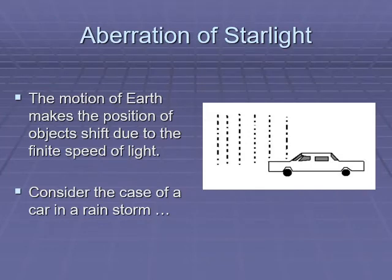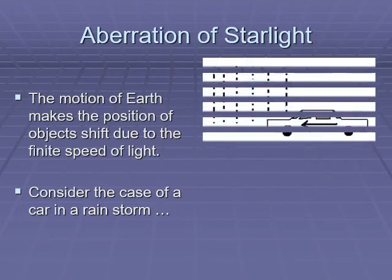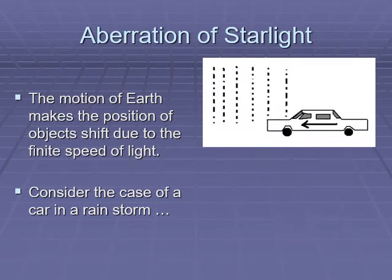Aberration of starlight - a good way of explaining this is imagine that you're sitting in a car in a parking lot somewhere, and rain is coming straight down on top of you. You look out of the car and rain's coming straight down. Now, what if your car is moving? You're driving down the road. What does it look like the rain is doing?